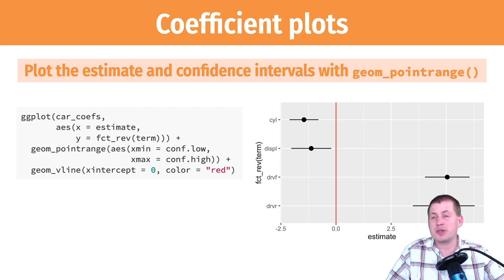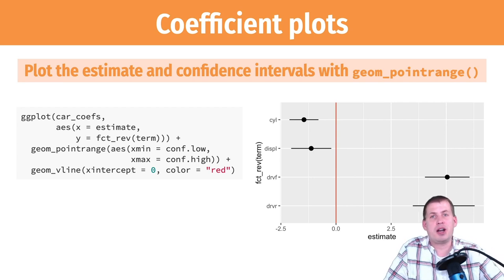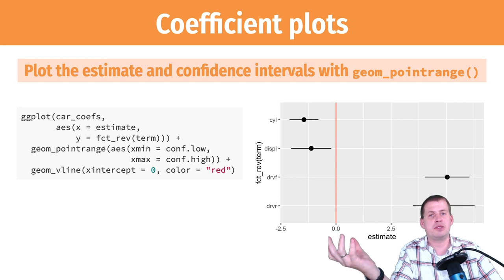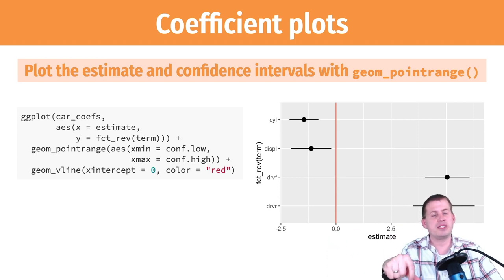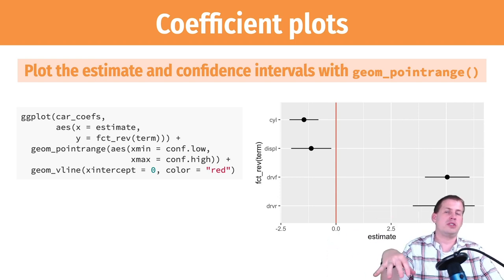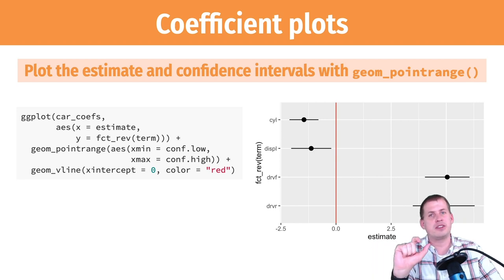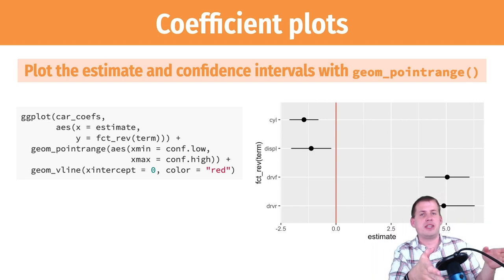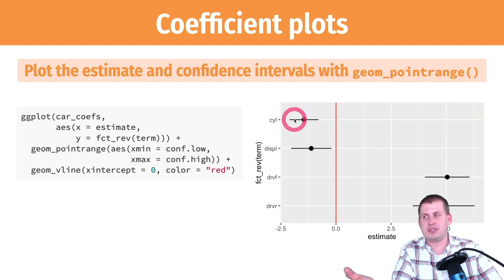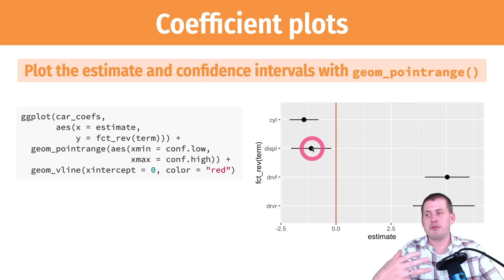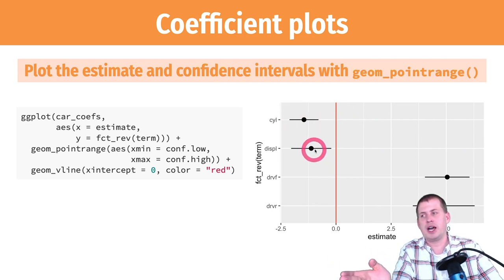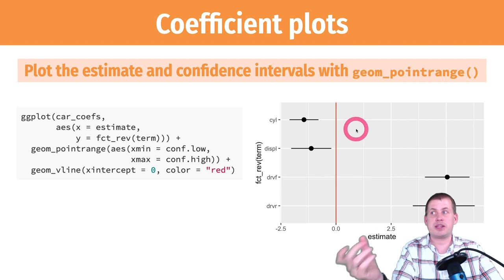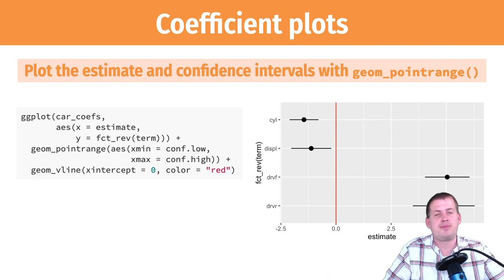Coefficient plots are becoming more popular in published research. Often you'll see academic articles, think tank articles, and policy papers with a coefficient plot in the main text and a full detailed table in the appendix. For most purposes, this is all people really need to know: how big is the coefficient, how far away is it from zero, how big are those errors — you can get all of that from the coefficient plot.